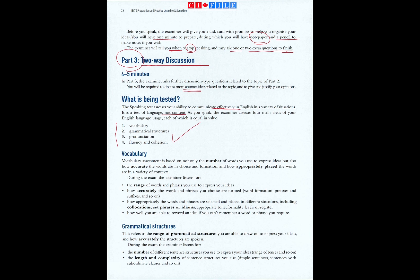Vocabulary assessment is based on not only the number of words you use to express ideas, but also how accurate the words are in choice and formation, and how appropriately placed the words are in a variety of contexts. The examiner listens for the range of words and phrases you use, how accurately they are formed — including word formation, prefixes and suffixes — how appropriately words and phrases are selected in different situations, including collocations, set phrases or idioms, appropriate tone, formality levels or register, and how well you are able to reword an idea if you cannot remember a word or phrase you require.